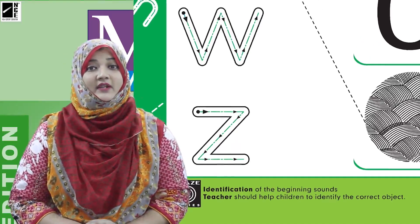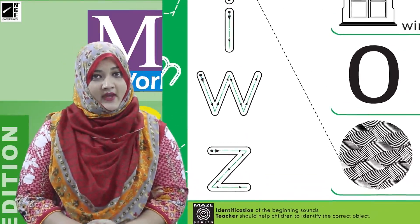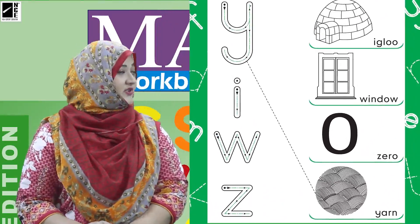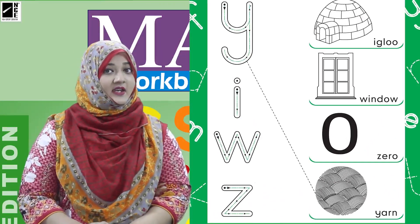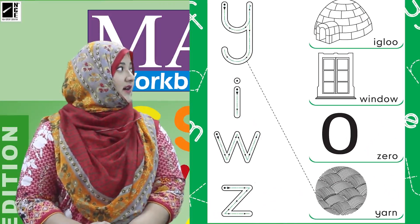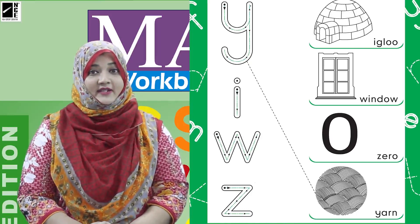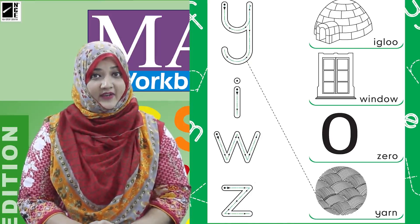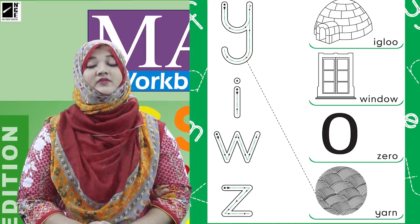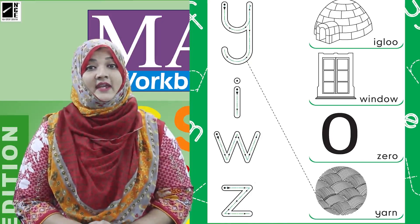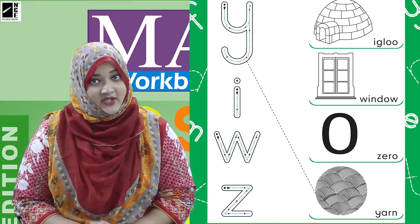Ab hume kya karna hai — yahaan pe second work hai matching. Yahaan pe kuch pictures di ni hain. So sounds are, we have pictures, beginning sounds to identify and correct sounds to match.